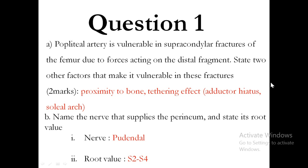Factor one is proximity to the bone — the popliteal artery usually lies on the popliteal surface of the femur. The second factor is what you call the tethering effect: there is connective tissue that anchors the popliteal artery from the adductor hiatus to the soleal arc.